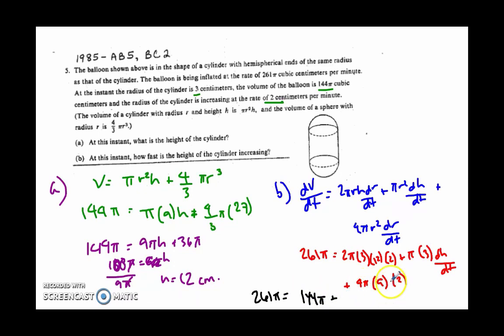Plus, I'm going to do this last term here. 4 times 9 is 36, times 2 is 72 pi, plus 3 pi dh dt.